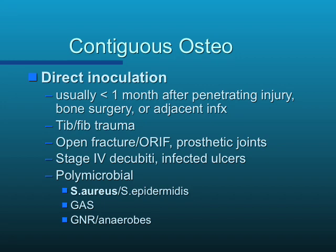Let's talk about contiguous osteomyelitis — osteo that occurs from direct inoculation through skin. Contiguous osteo will usually manifest within a month after a penetrating injury, bone surgery, or an adjacent infection. If it's after bone surgery within a month, it's more likely to be Staph aureus or a more aggressive pathogen. But you can also see less aggressive pathogens like coagulase-negative Staphylococcus causing later infections from direct inoculation. In the setting of trauma, it usually involves the tibia and fibula with open fractures, open reduction, and internal fixation, as well as prosthetic joints.